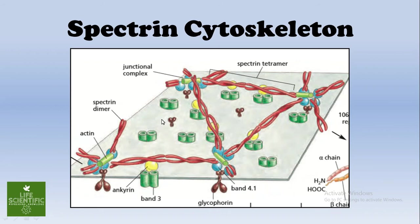The spectrin cytoskeleton is present within the RBC and is riveted to the membrane through various membrane proteins. As you can see in the figure, this is the spectrin cytoskeleton. The spectrin homodimers are linked to one another into a net-like meshwork by junctional complexes.